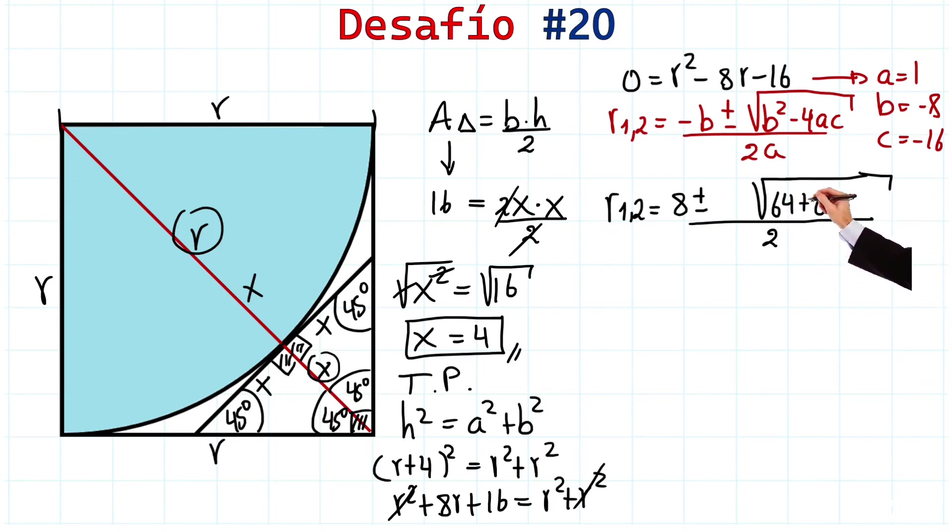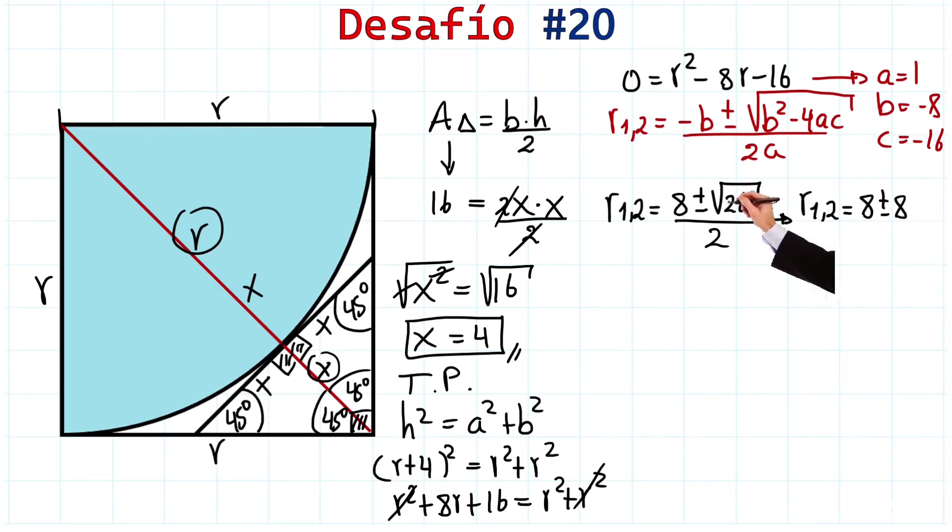And what is 64 plus 64? Well, 2 times 64. Let's write it that way. We have plus the square root of 2 times 64. Excellent! And here we have all of this over 2. Very well! We have simplified. Now, the solutions, right? So, notice that R1, 2 will be equal to 8 plus or minus, taking the square root of 64, which is 8. Inside the root, we'll have 2. And all these over 2, we can factor out a common factor of 2, of course.